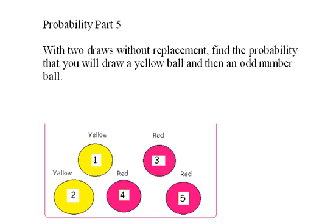Probability Part 5. Even with a simple urn problem like this, you can get yourself into a lot of trouble very quickly. This one's fairly complicated. With two draws without replacement, find the probability that you will draw a yellow ball and then an odd number ball.